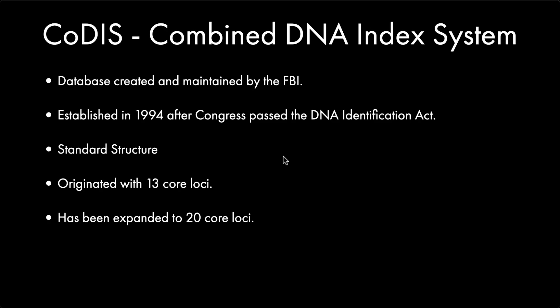When they do the STR analysis, they upload it to a database which was created and is maintained by the FBI called CODIS, which stands for Combined DNA Index System. This system is actually pretty old — it was established in 1994. It has a standardized structure, and it originated with 13 core locations where they're looking for those STR repeats. That has since been expanded over time to 20 core loci.